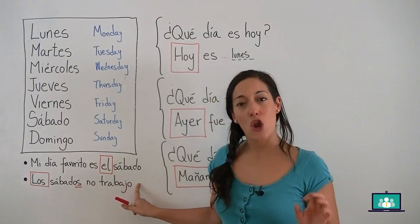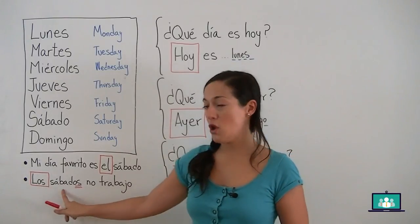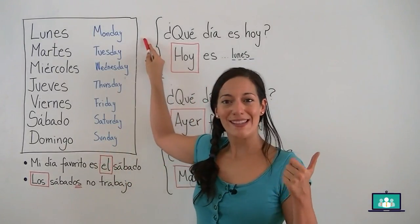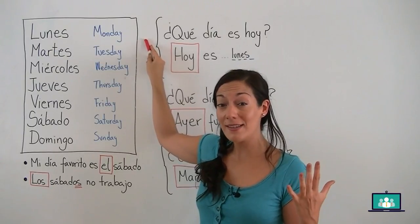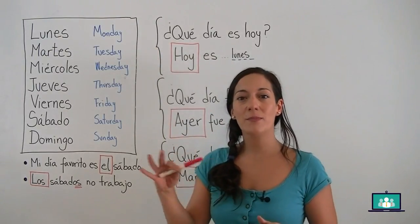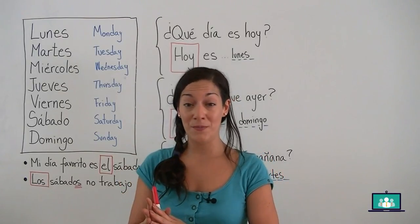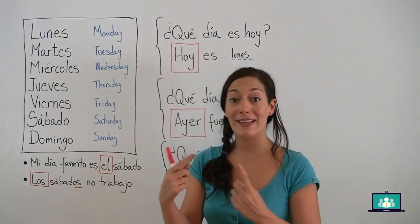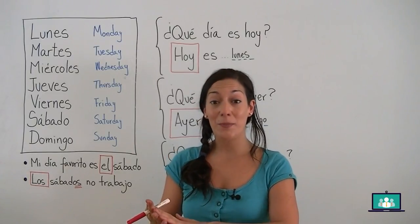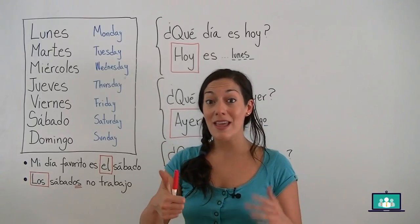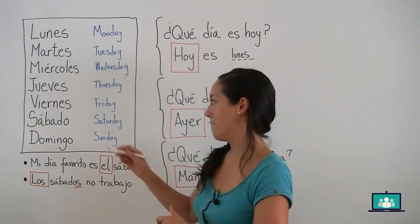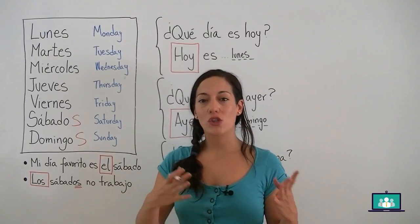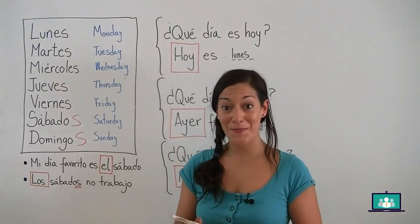I said, los sábados no trabajo. Plural. Lunes, martes, miércoles, jueves, viernes don't have a plural form. To make them plural, we just need to change the article. But Saturday and Sunday — sábado y domingo — they have a plural form, so we need to change the article and add an S: sábados, domingos. Los sábados y los domingos. Muy bien.